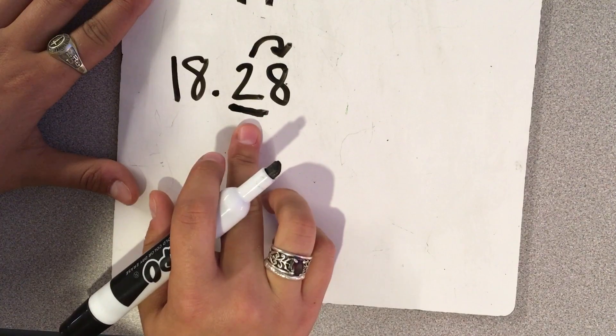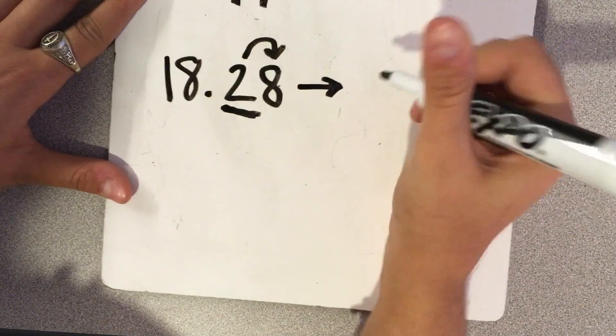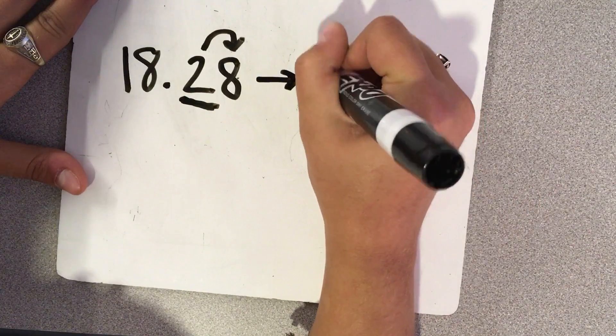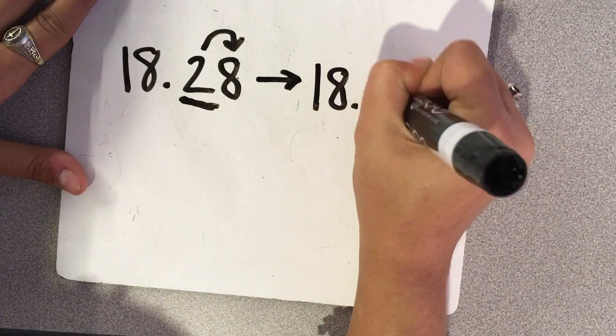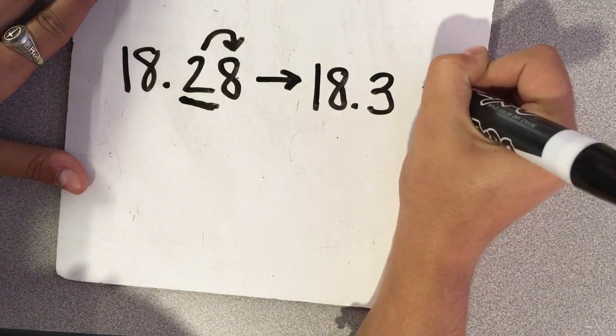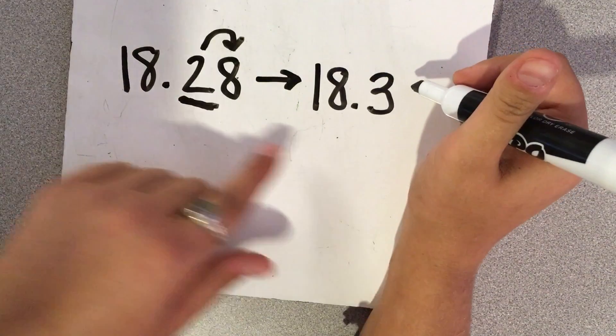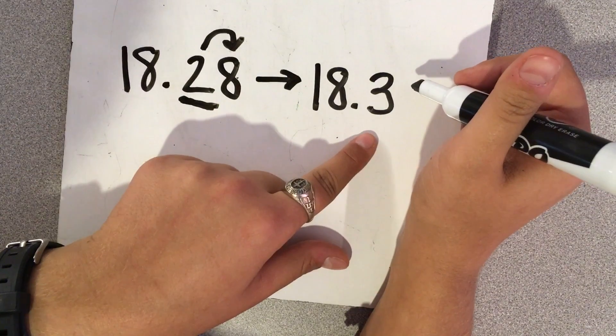Just one digit, 18 and 3 tenths. We don't need to add a zero because it only wants us to round to the tenths. We need to stop right here.